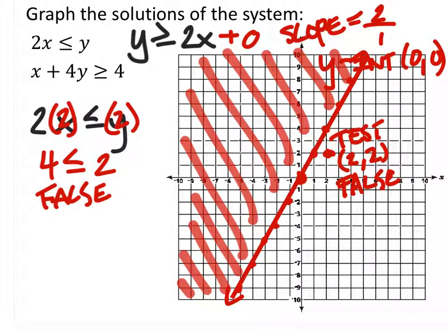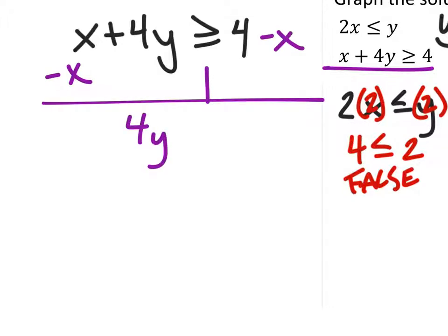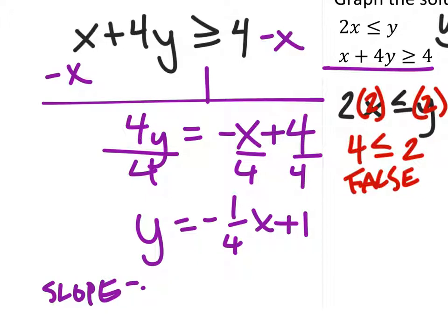Alright, this other equation, right here. Let's go ahead and give ourselves some space. We'll need to subtract x from both sides. So, 4y, we can treat this as equals because we're just looking for the line here. I'll divide everywhere by 4 now. And we get y equals negative 1 fourth x plus 1.